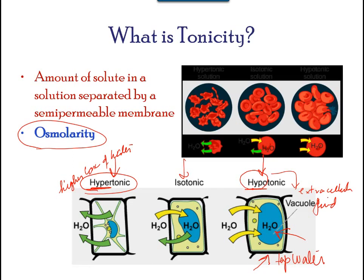In an isotonic solution, the extracellular fluid has the same osmolarity as the cell. If this is the case, then the concentration of solutes of the cell matches that of the extracellular fluid. Hence, there will be no movement of water into or out of the cell. Blood cells in hypertonic, isotonic, and hypotonic solutions take on characteristic appearances. Osmotic pressure changes the shape of red blood cells in hypertonic, isotonic, and hypotonic solutions.